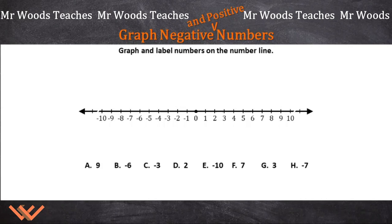I'm going to graph the positive numbers first and then the negative numbers, but look here it says graph and label the numbers on the number line. So there's a direction that we need to do, is we need to graph it and label it. So there's two things that we need to do here.